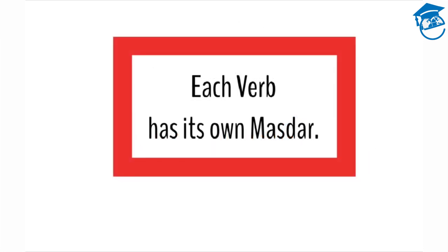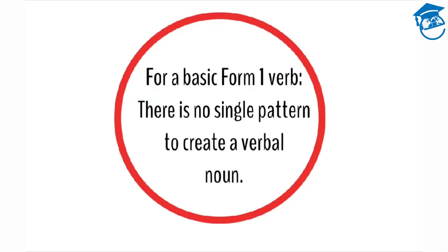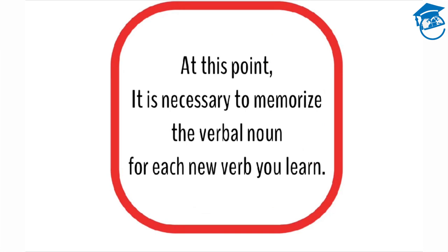Each verb has its own masdar. For a basic form one verb, there is no single pattern to create a verbal noun. There are some patterns that you can use, but at this point it's necessary to memorize the verbal noun for each new verb that you learn — this would be the easiest way. Later on, as we look at each of the different verb forms, you'll find that there is in fact a special masdar related to the other forms from form two to ten. But the easiest thing to do for a form one verb is just to learn the verbal noun and the verb at the same time.